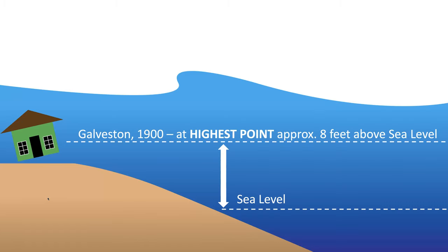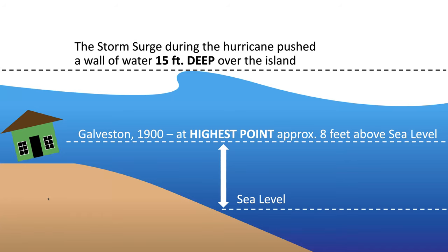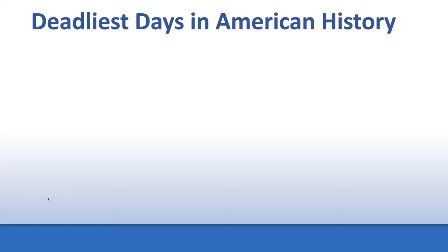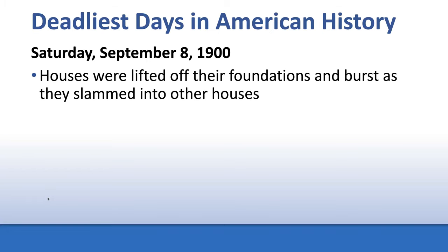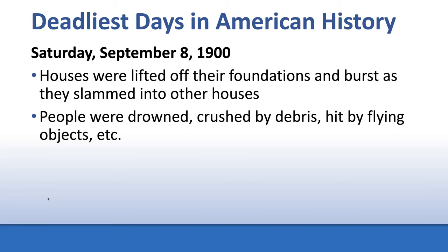In 1900, the storm surge pushed a wall of water about 15 feet deep over the island. Houses were lifted off their foundations and burst as they slammed into each other. Remember, the houses then were made of wood — not cement foundations. They were lifted off their foundations by the rising water, and as they floated they crashed into other houses, many of them still filled with people.